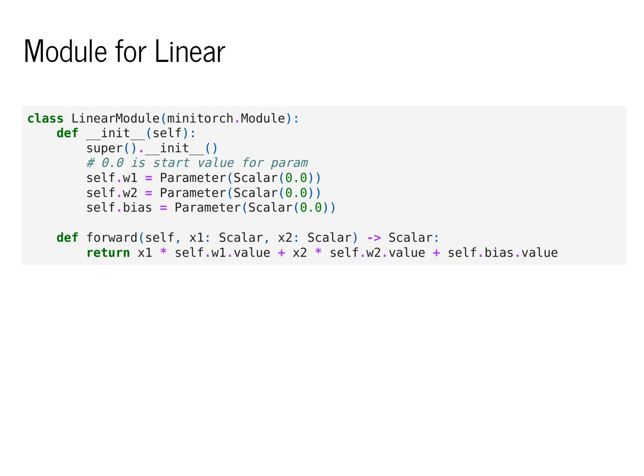Now let's connect this back to the code in MiniTorch. I've been using shorthand to describe a linear model, but now let's actually use the module structure that we built up in our last homework assignment. We'll define a class that represents a linear module. It will have as its init the standard boilerplate where we initialize the superclass, and then we'll define three parameters: w1, w2, and bias. I'll define these as scalars and set their initial value to 0.0.